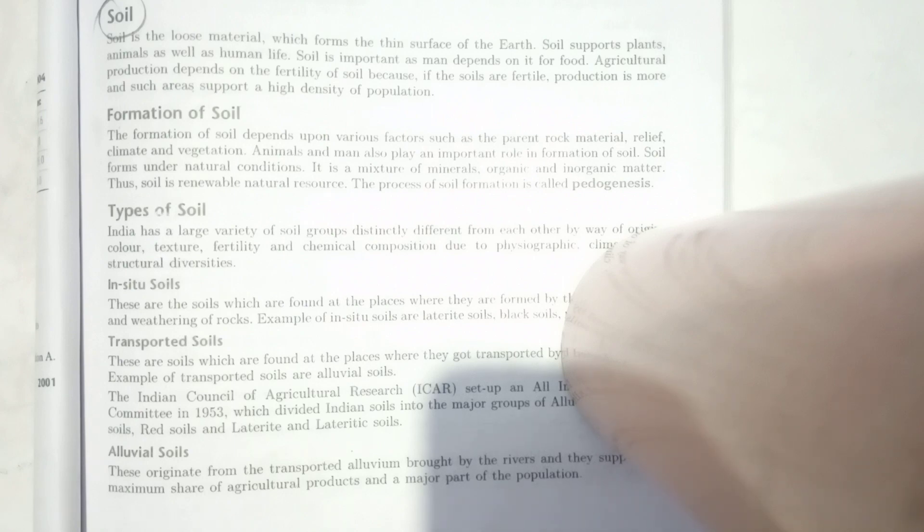Everyone knows what soil is. Soil is the outermost layer of the earth's crust. It consists of lots of minerals, particles, and decaying matter from animals and plants.